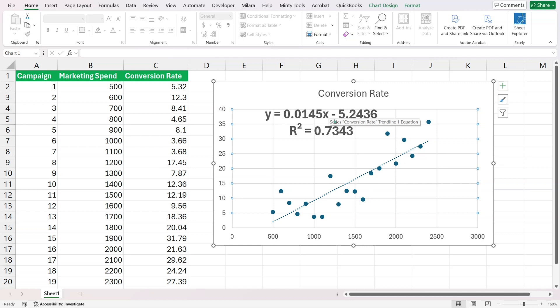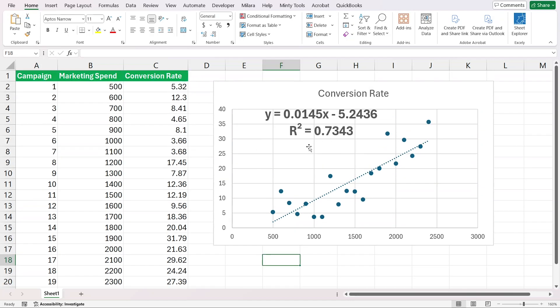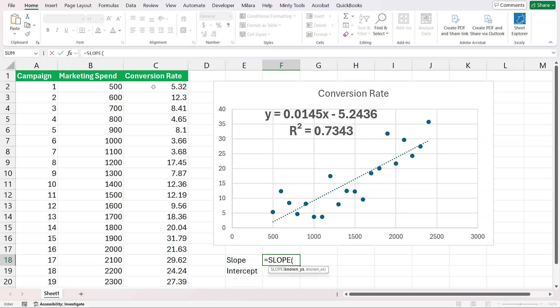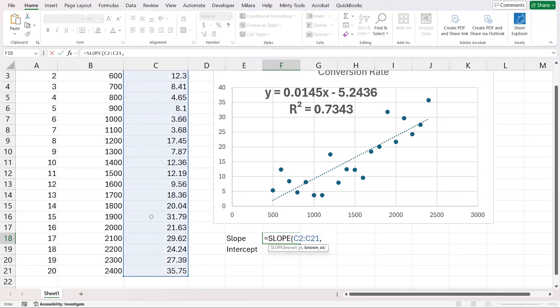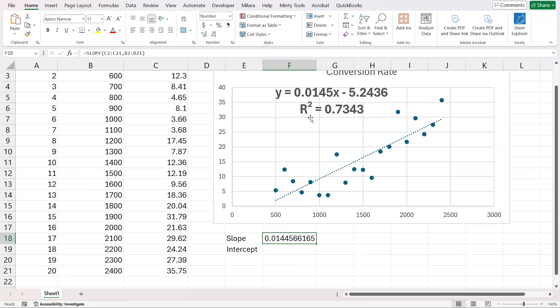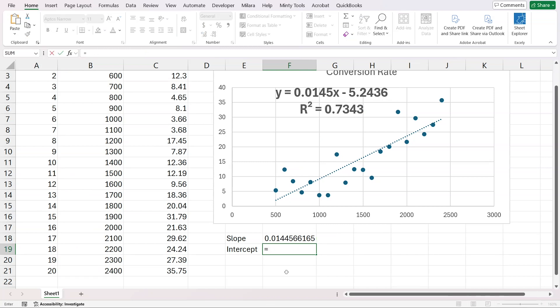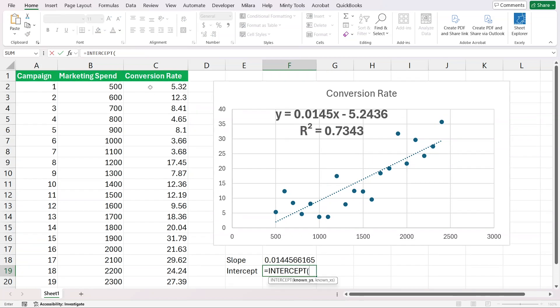Let's use the slope and intercept formula to calculate them. Here I'm going to say slope and intercept. I can use the slope formula in Excel, which asks for the known Y's and known X's. Y's are what we are predicting, the conversion rate. I'm going to select all the conversion rates. For known X's, I'm going to select all the marketing spends. We can expand that a bit more, and this is our slope. Our intercept can be calculated using the intercept formula. It takes the same values, known Y's and known X's. This is our intercept here.